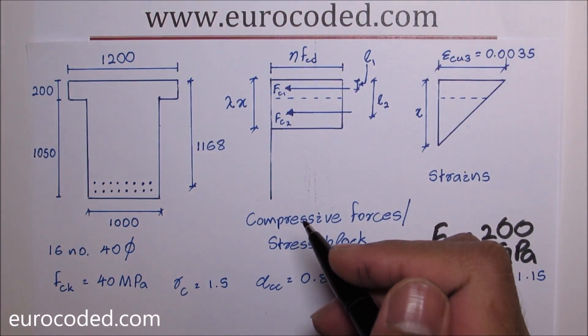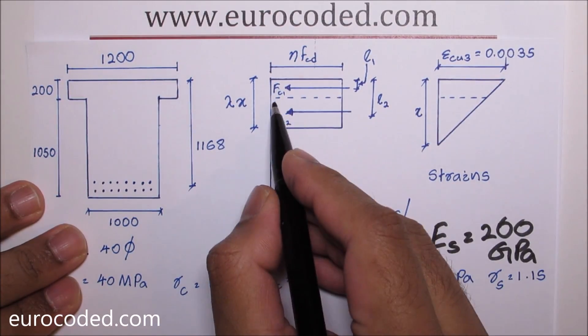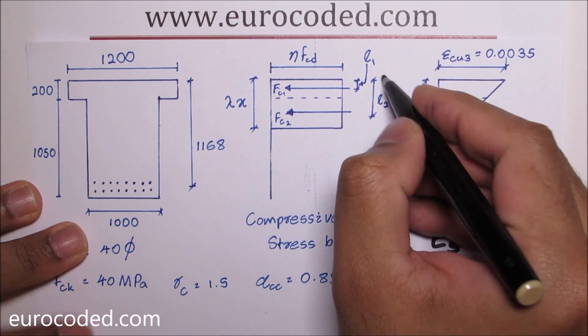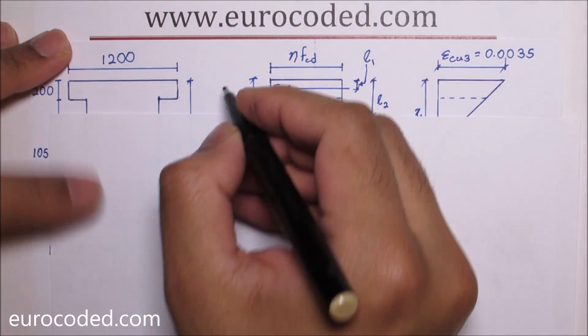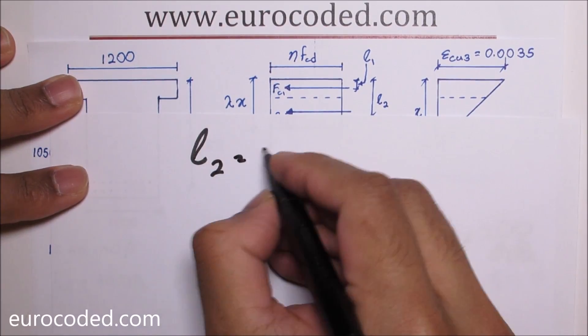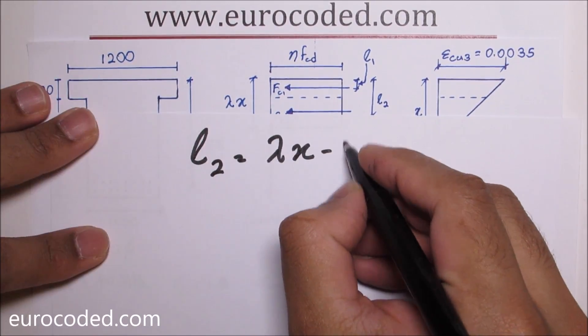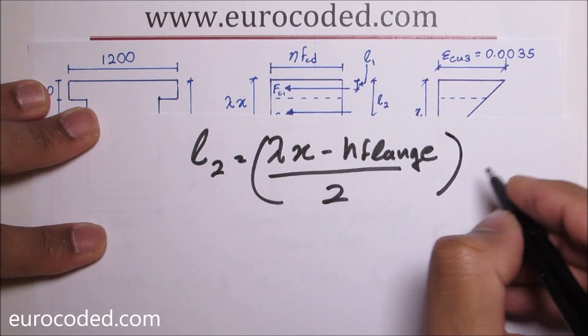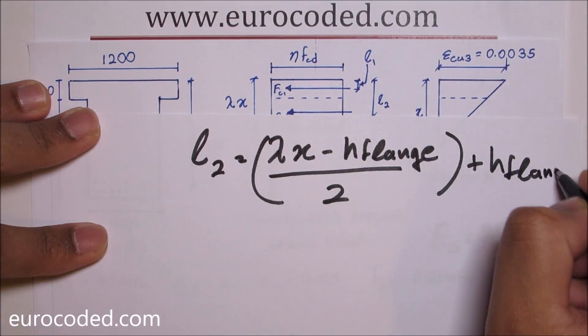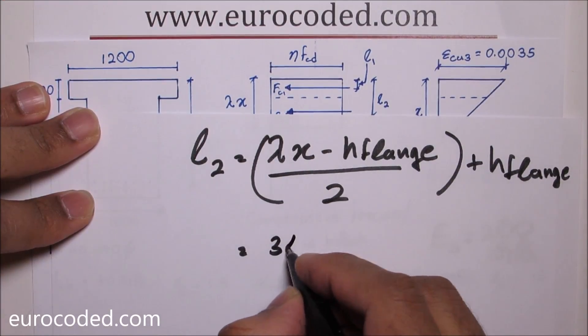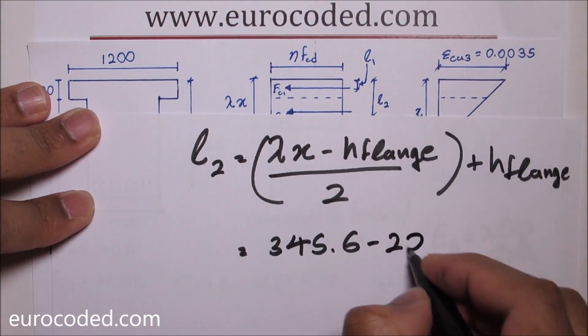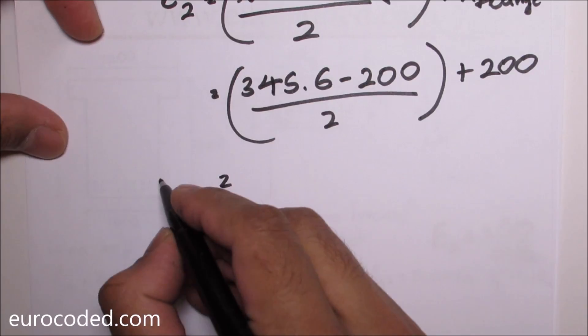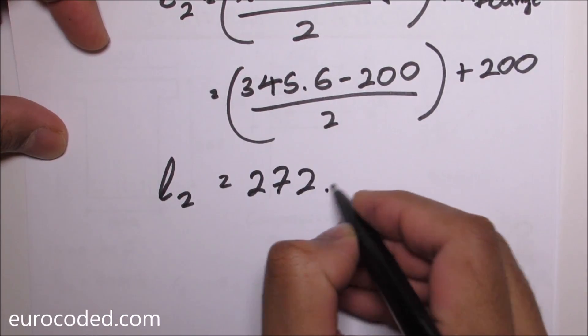Then we need to calculate the centroid of compression zone in the web, which is this section below this dash line. We need to calculate the centroid and the distance from the top of the section to the centroid which is L2. We can write L2 as lambda X minus the depth of the flange over 2 plus the depth of the flange, which is 345.6 minus 200 over 2 plus 200. L2 is equal to 272.8 millimeter.